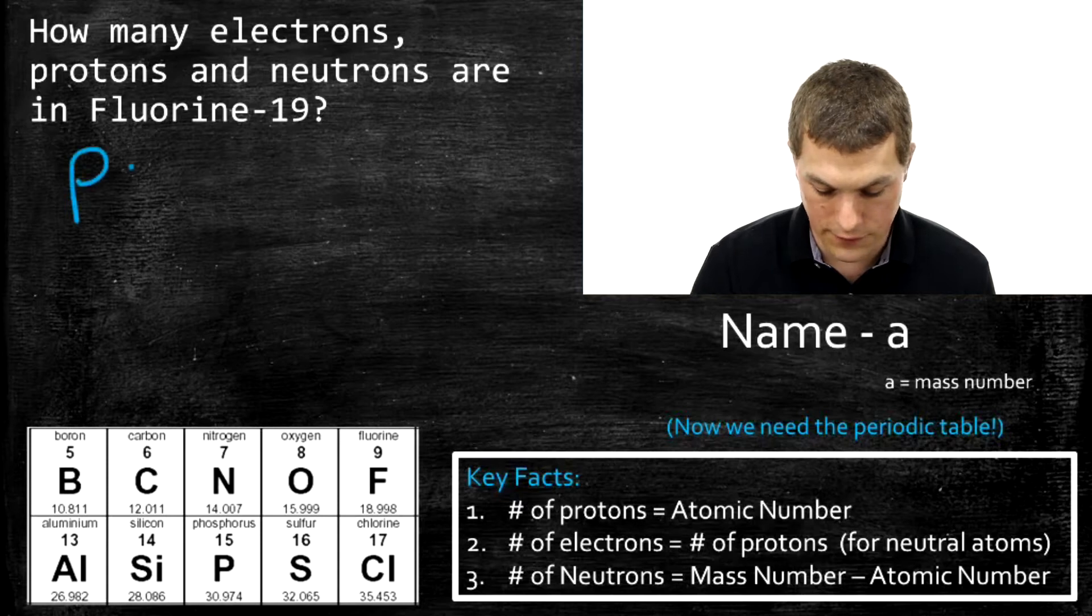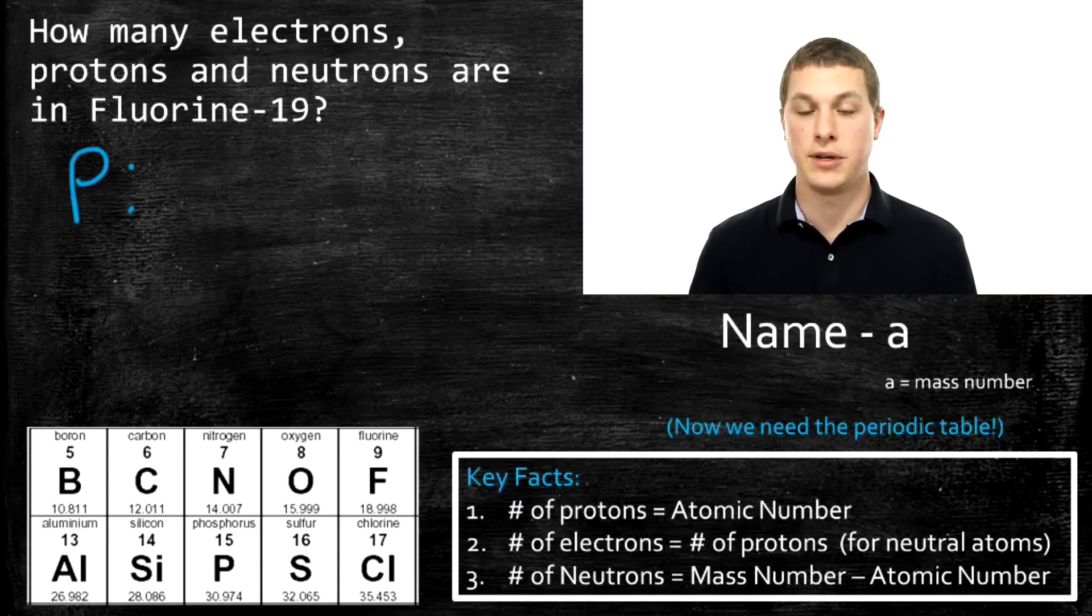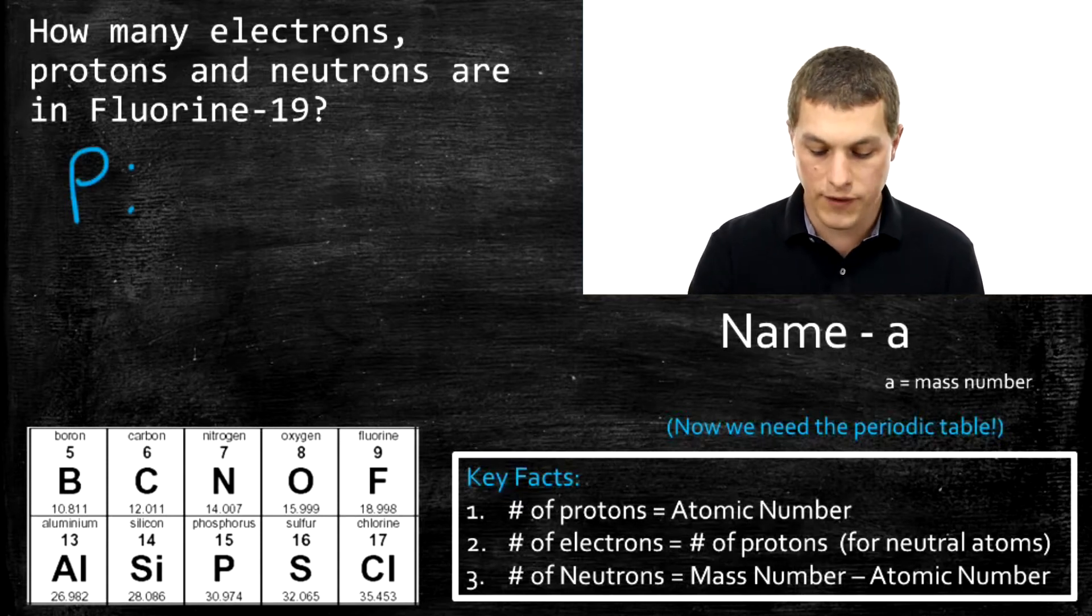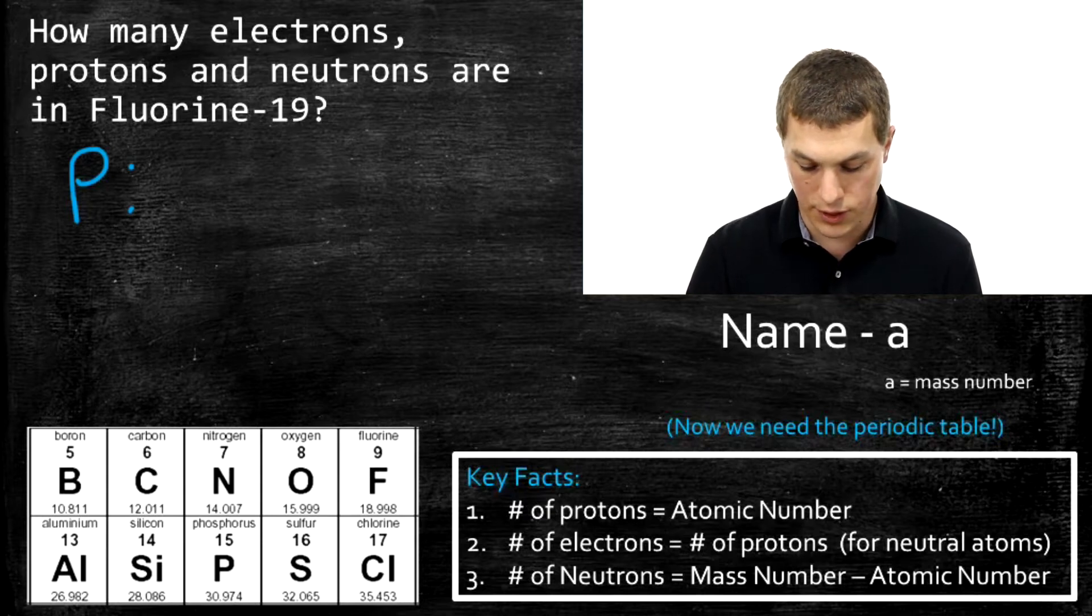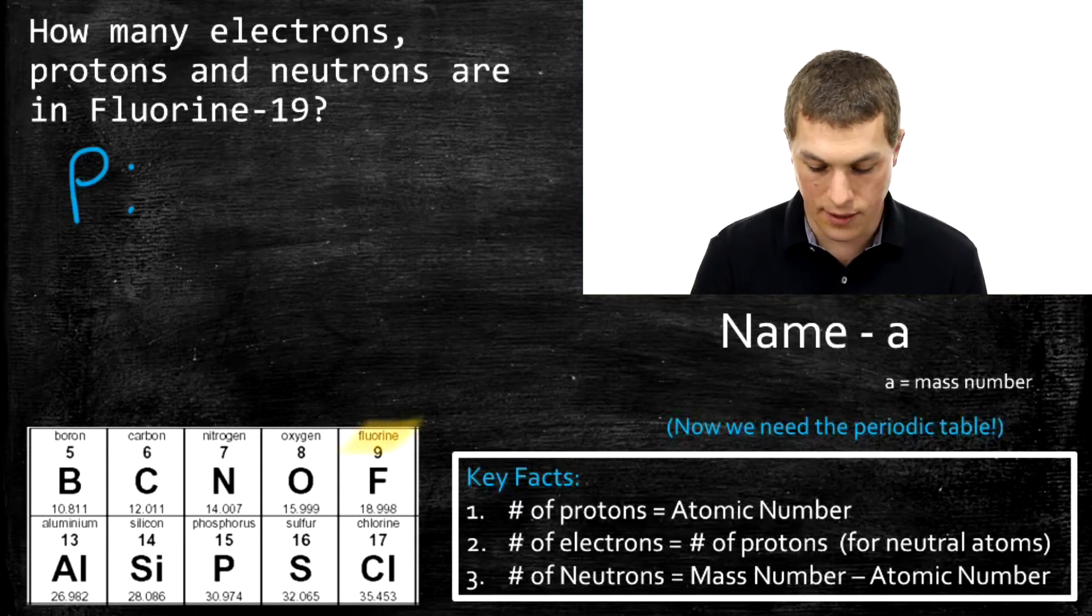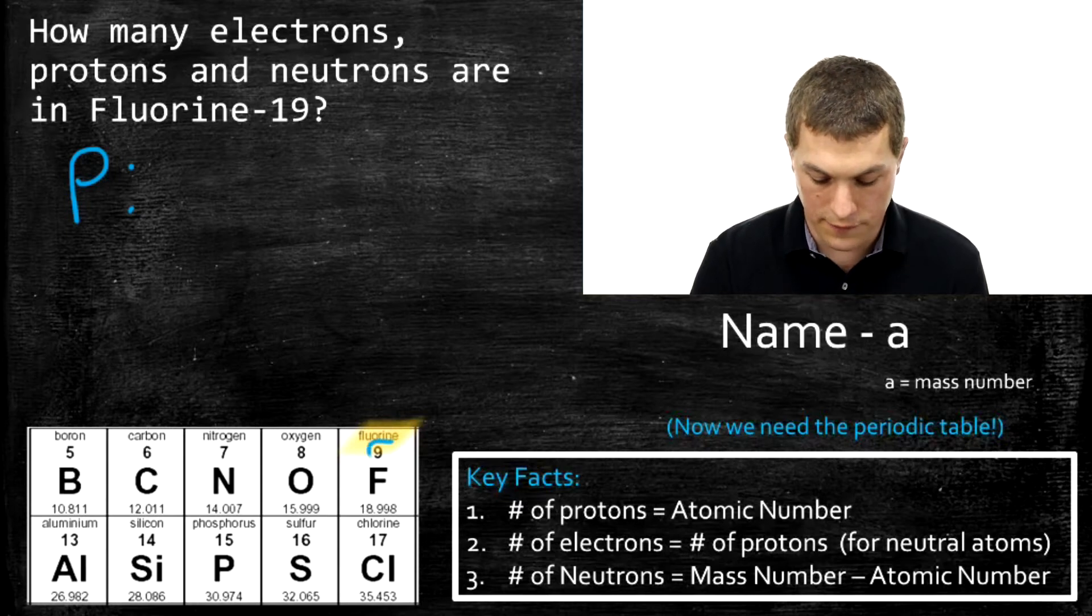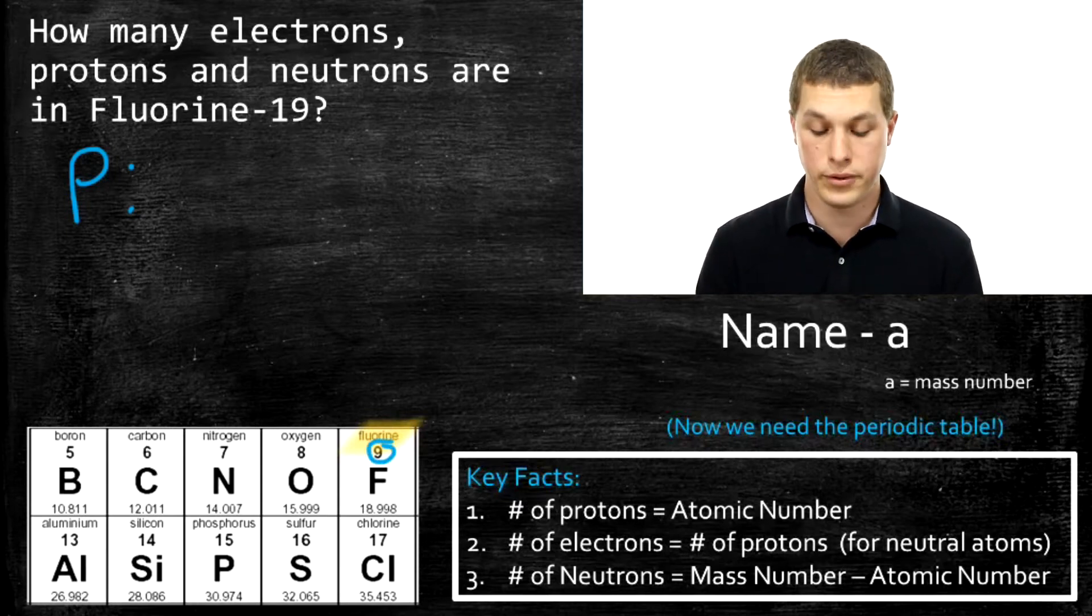So we'll still do protons first, and if we look down here in the periodic table, we can find sulfur, I'm sorry, fluorine, and we see there's 9 there. And that 9 above fluorine is the atomic number, or the number of protons.